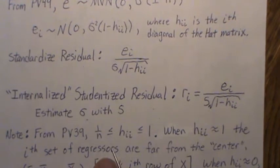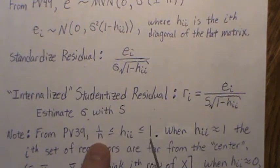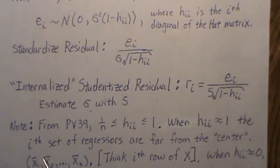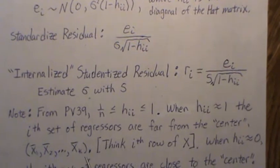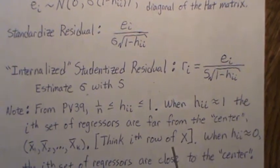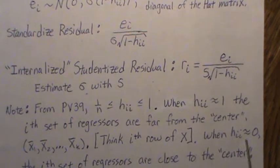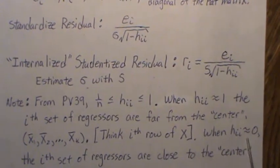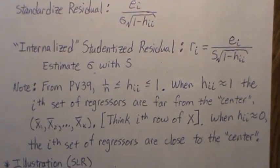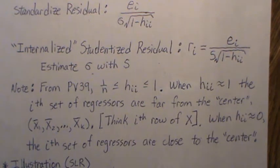From previous video 39, we showed that the ith diagonal of the hat matrix is always between 1/n and 1. When h_ii is close to 1, the ith set of regressors — think of the ith row of the design matrix — is far from the center, i.e., the mean of all components. When h_ii is close to zero, the regressors are close to the center, which becomes important when we deal with influence diagnostics.